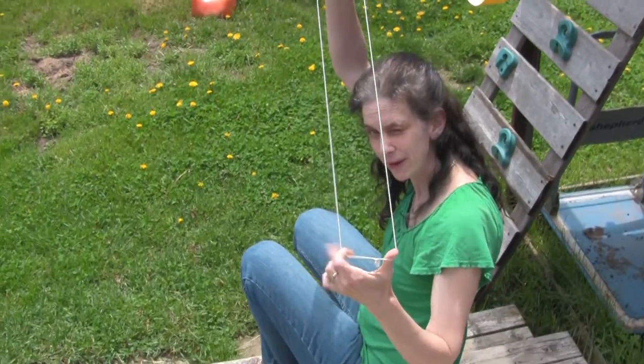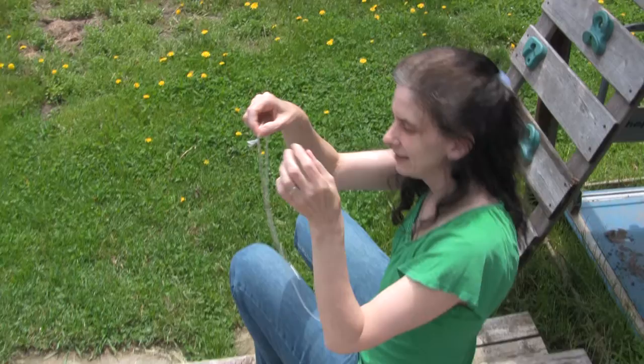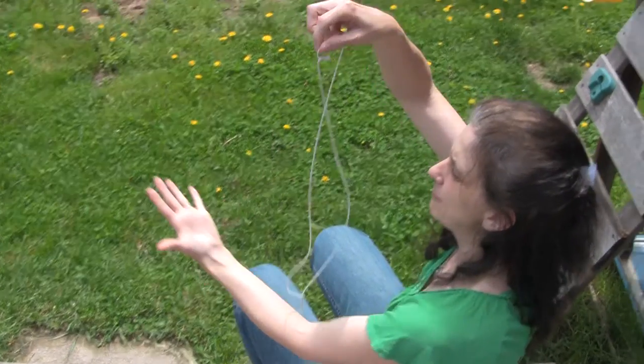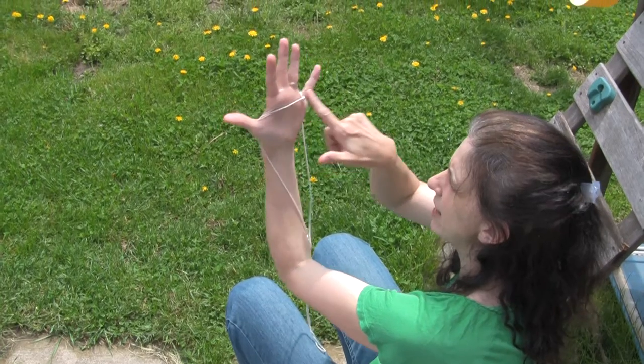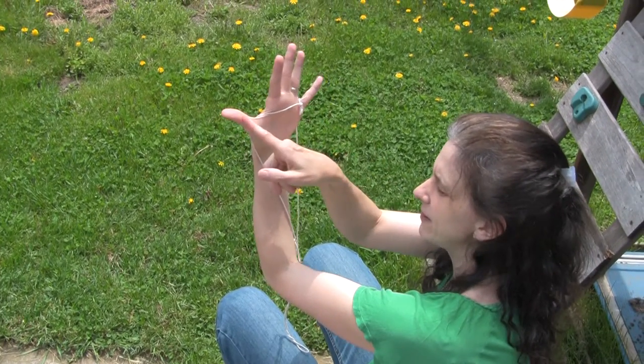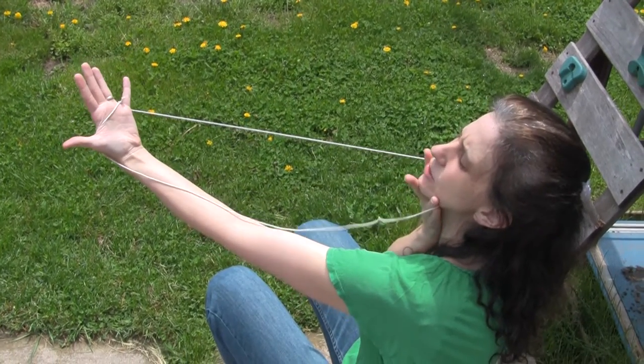You take your piece of string, which is about that big, and tie a knot in it. Then you drape the string across the palm of your hand, looping over your baby finger and your thumb so that the rest of it goes in front of your arm and can touch your chin.